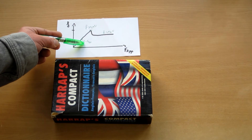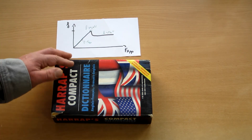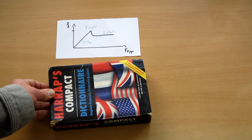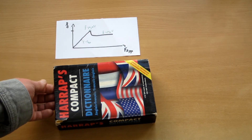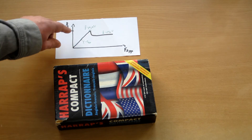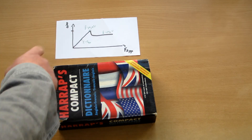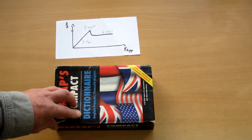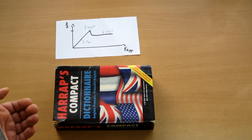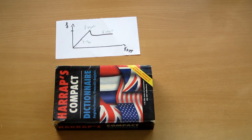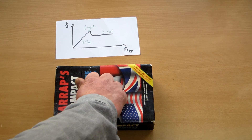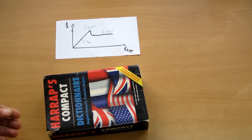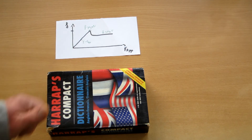Therefore, the force of friction is equal to the force applied. But if I apply a force which is bigger, you saw the book just started to move. In this situation, where I just apply the force needed to stop the book from moving, the force of friction equals the coefficient of static friction — which is due to the roughness of the surfaces — multiplied by the normal force, which represents the weight of the book. If I push down on the book, the normal force increases, so I need to apply more force to move it because friction is bigger.